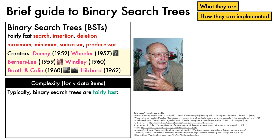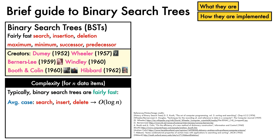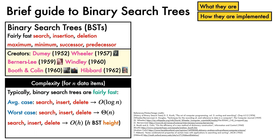Typically, binary search tree operations are fairly fast. The average case complexity of searching, insertion, and deletion is logarithmic in the number of stored items. However, a naive binary search tree has worst case complexity that is linear in N. An alternative way to view these statements is to note that search, insertion, and deletion is linear in the height of the binary search tree. Nicely balanced trees will have good behaviour because their height grows logarithmically in N, but unbalanced trees have a height that grows linearly in N. With regards to storage, the cost is linear in the number of nodes in the tree.